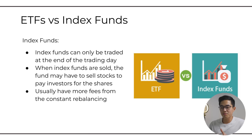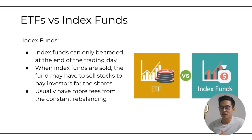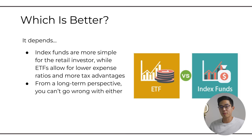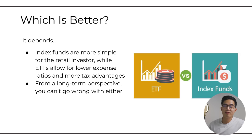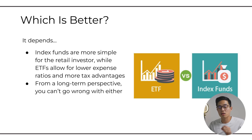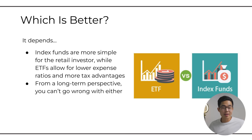When index funds are sold, the fund may have to sell stocks to pay investors for the shares. Index funds also usually have more fees from the constant rebalancing. As for which one is better, it really just depends. For most beginners, I'd actually recommend just getting started with ETFs. A lot of index funds have minimum requirements — for example, a lot of the Vanguard index funds have a $3,000 or more minimum investment — whereas for ETFs you can trade with much less, and you can even buy partial shares on certain platforms.